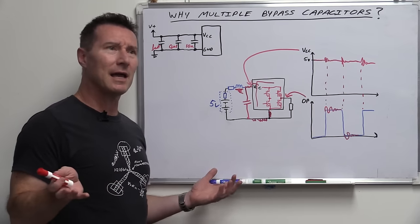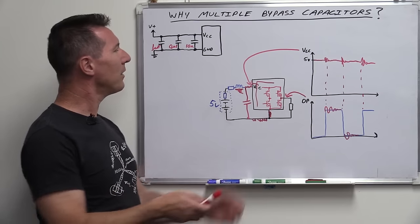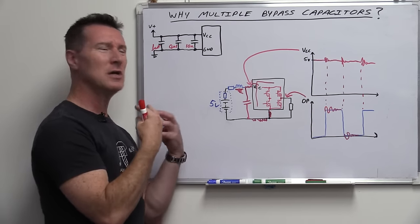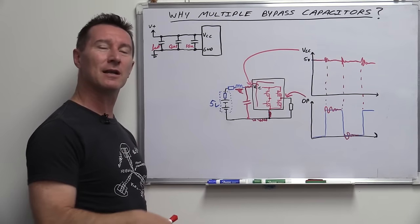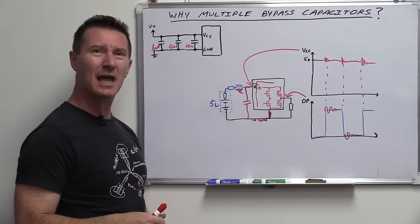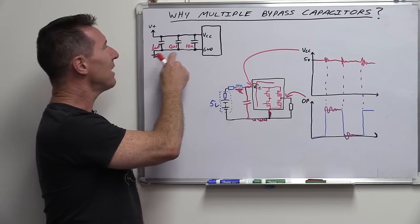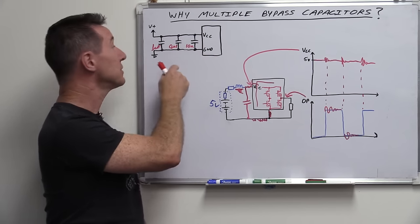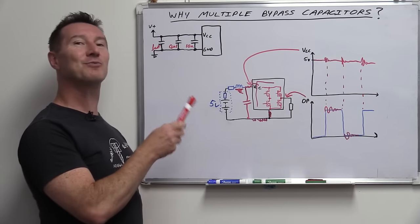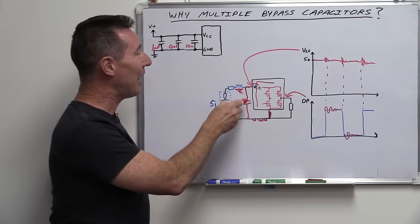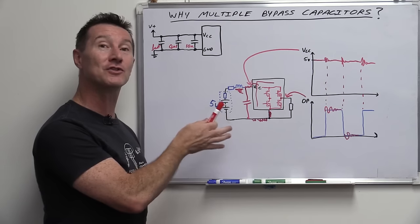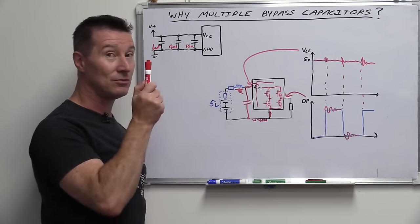So why not just put one big bypass capacitor on there that can handle the maximum pulse current the switching chip is going to take? Why do you need multiple different values and types of capacitors? This is where we have to get into what a capacitor actually does and its impedance versus frequency.